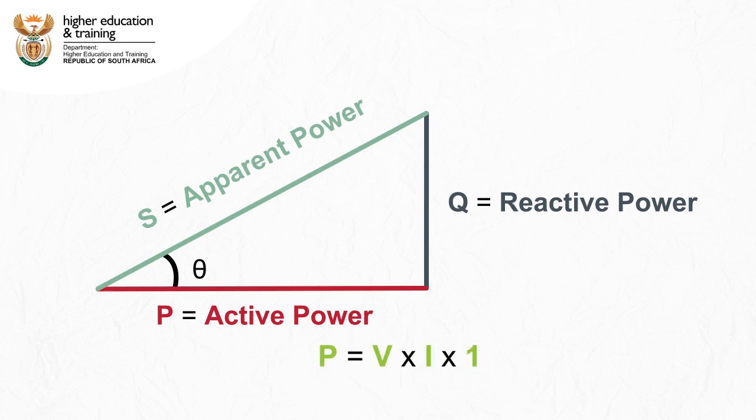In other words, no reactive power in the circuit. Almost always, though, there is some reactive power, so the power factor is less than 1.